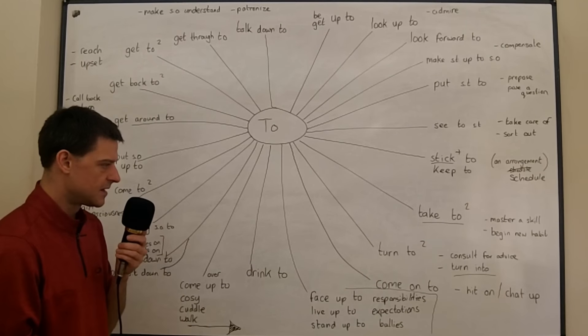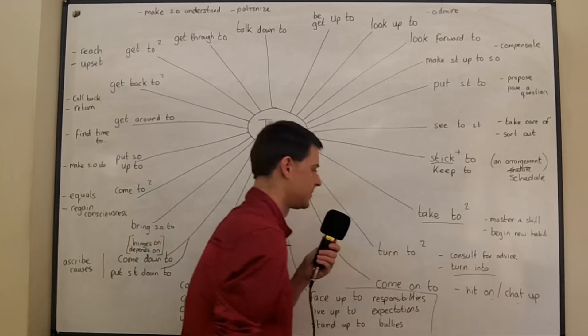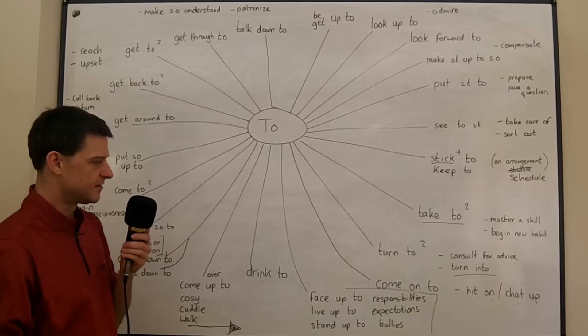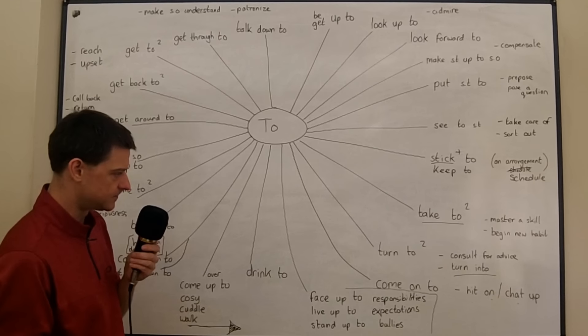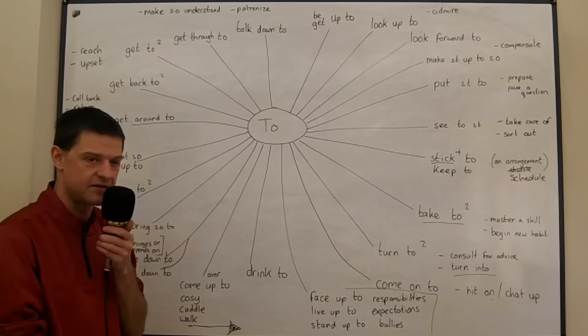If somebody comes on to you that means they are hitting on you, they are chatting you up, they like you in some kind of way and maybe they want your phone number, something like that. They're coming on to you. I think that's quite American but I hope you'll hear it here as well in the UK.